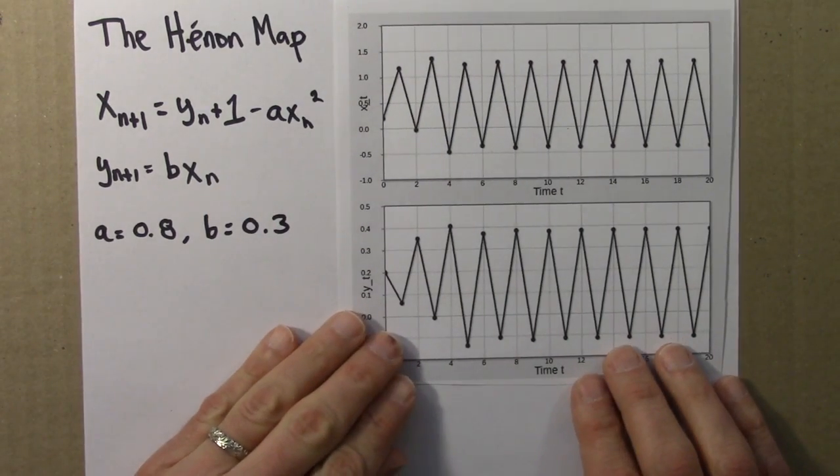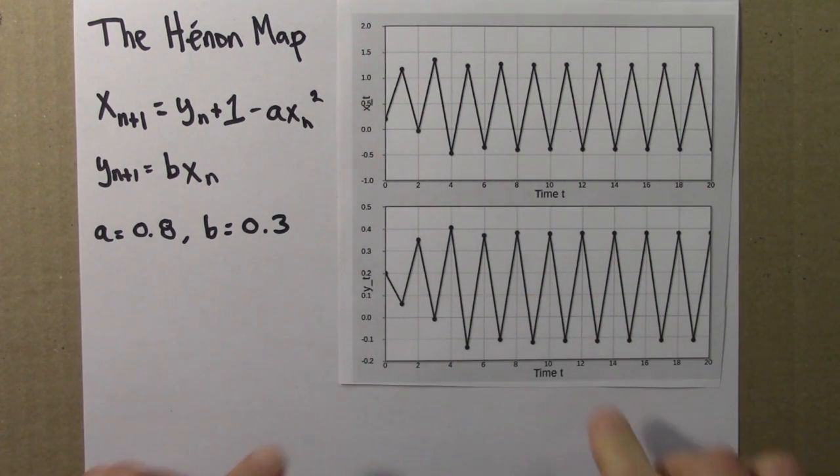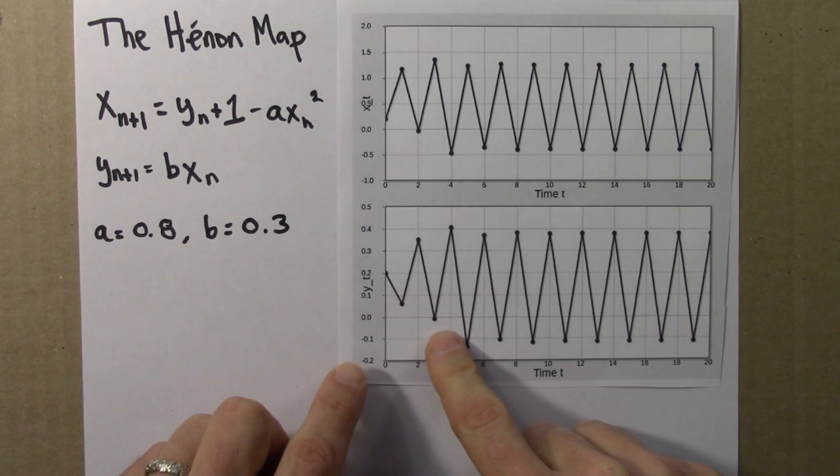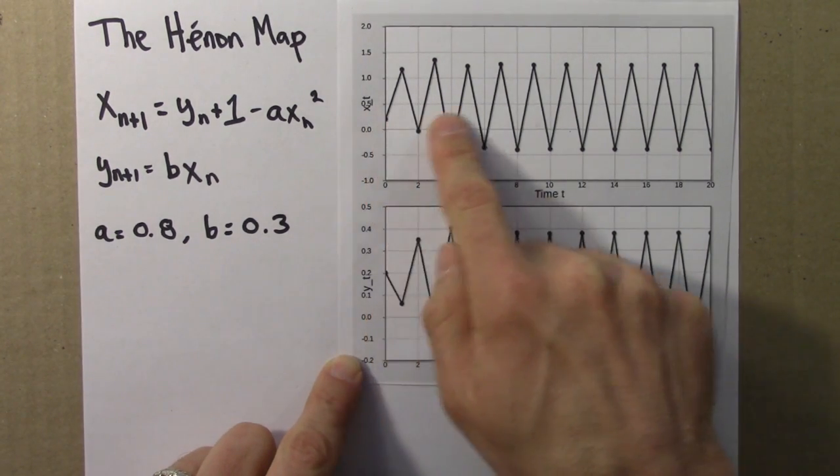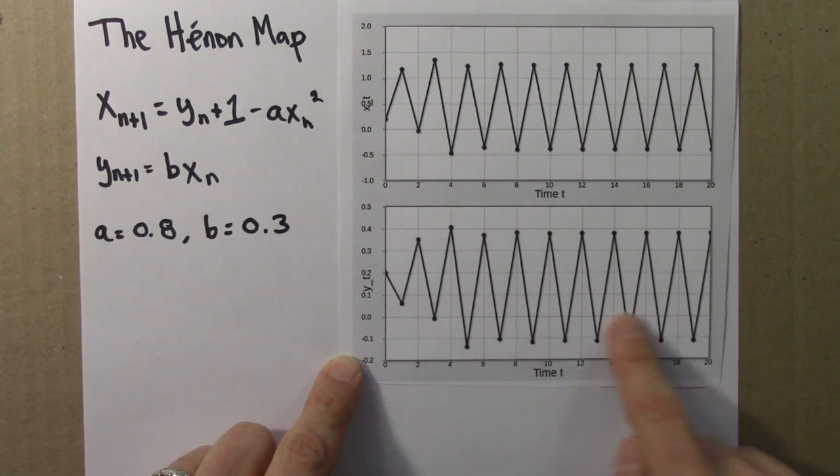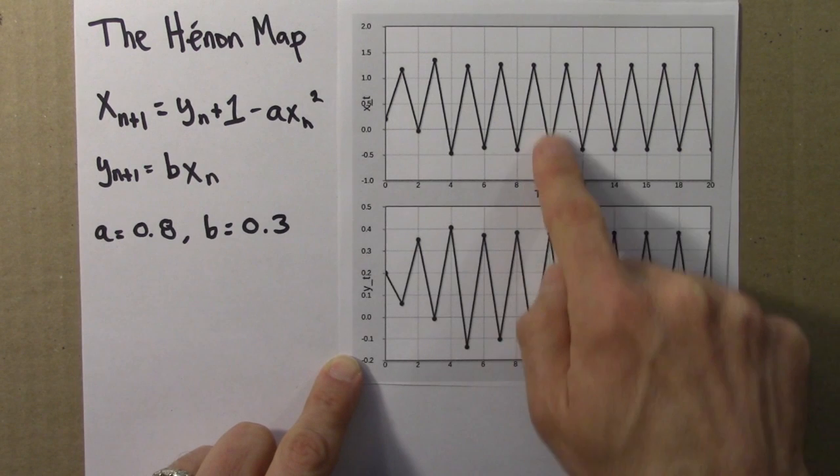And if we did that, the program on the web, which I'll show you again in a second, but just here's a screenshot from it, one can see that the orbit pretty quickly approaches a cycle of period 2. So this is the time series for x, this is the time series for y, and they're both wiggling, repeating every two steps.